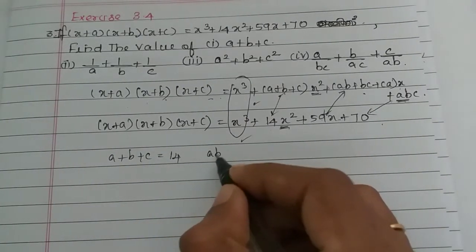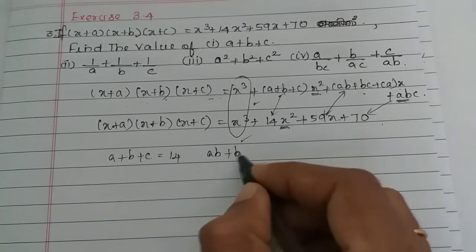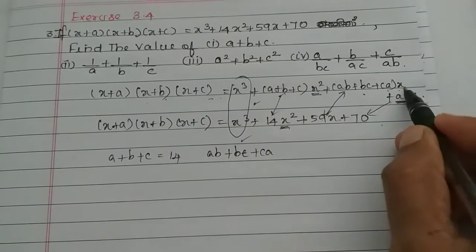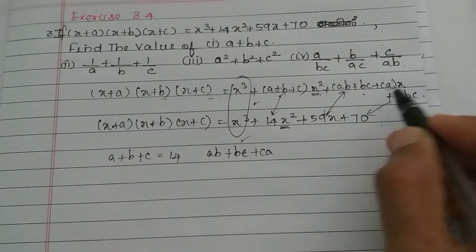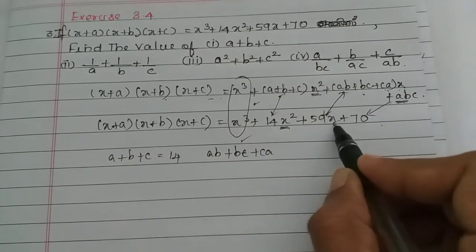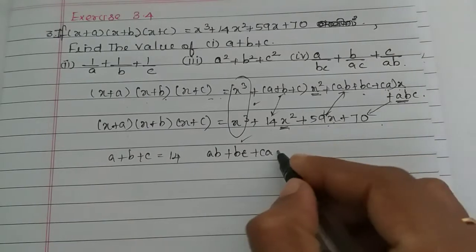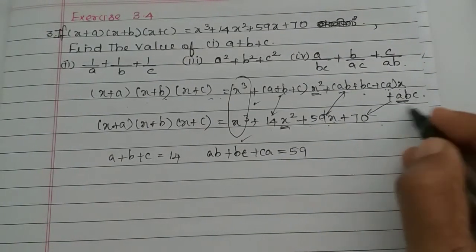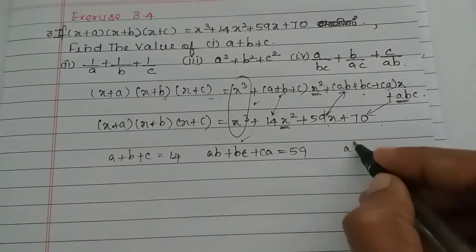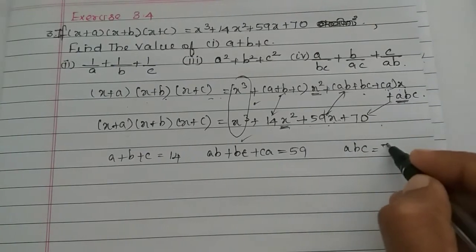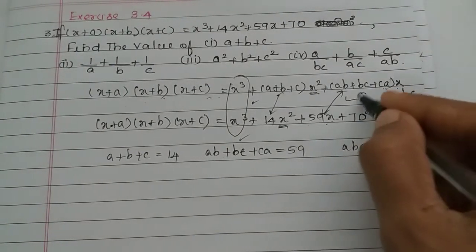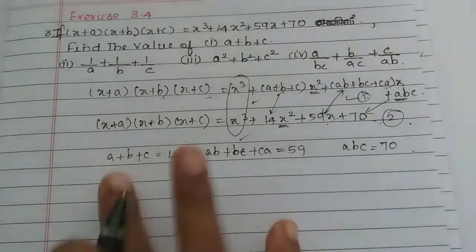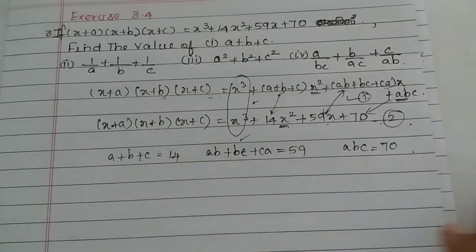A plus B plus C equals 14. AB plus BC plus CA — this is the x-order coefficient, AB plus BC plus CA equals 59. Then the constant ABC equals 70. These are equation 1 and 2; we compare the values.